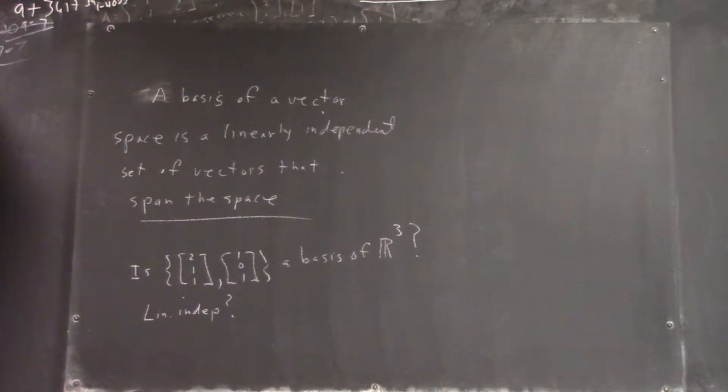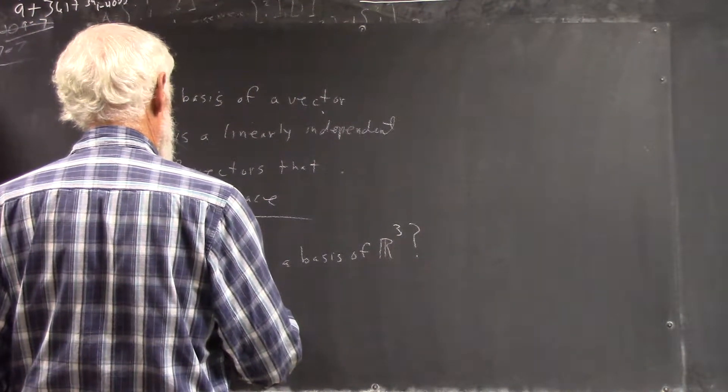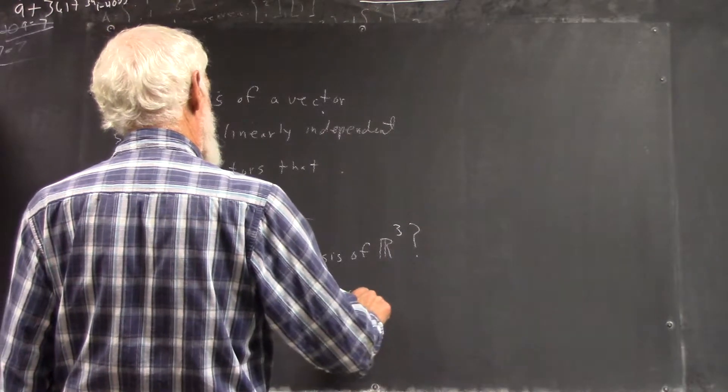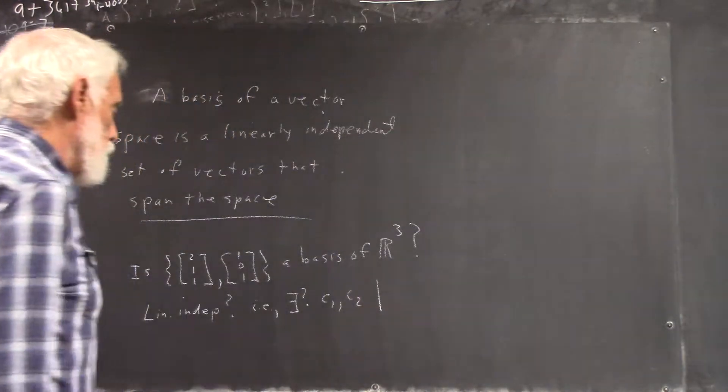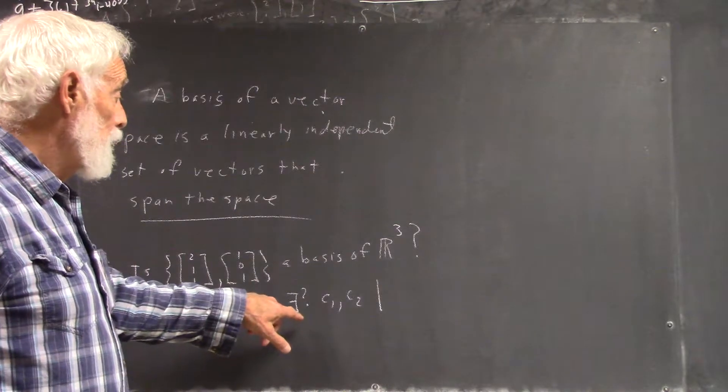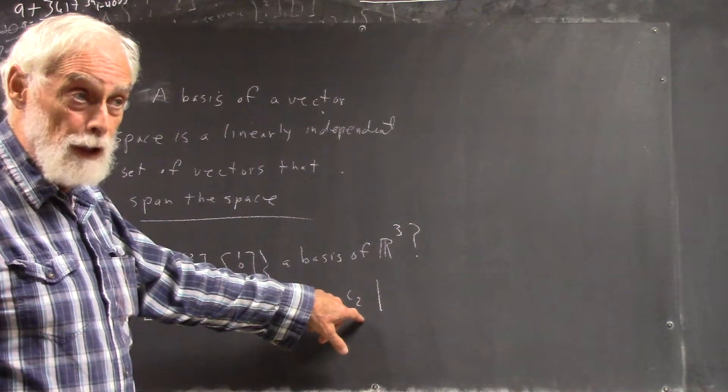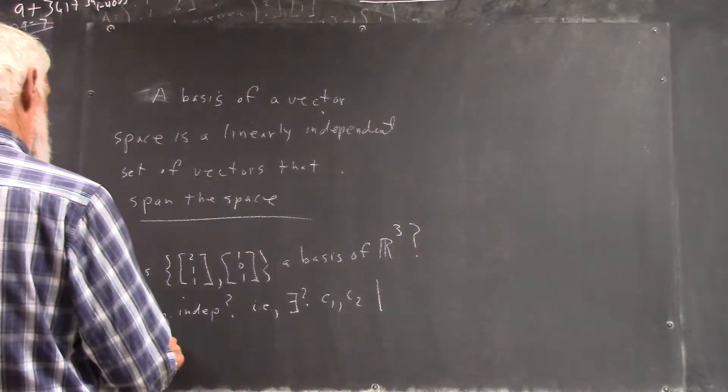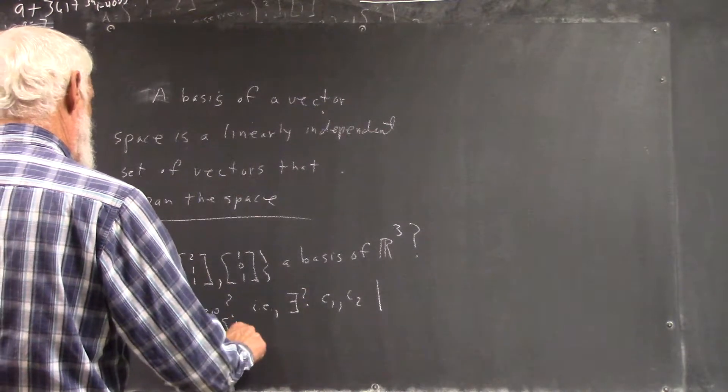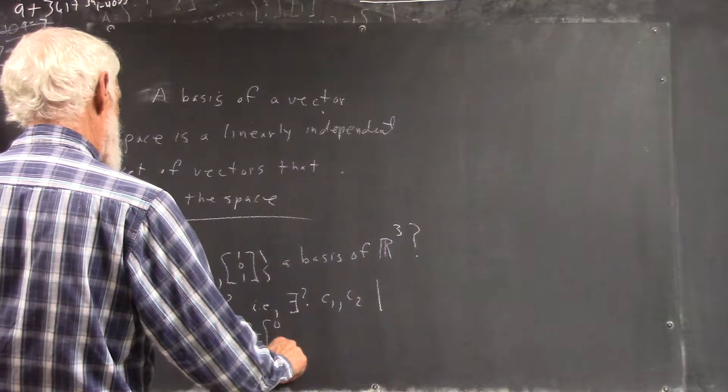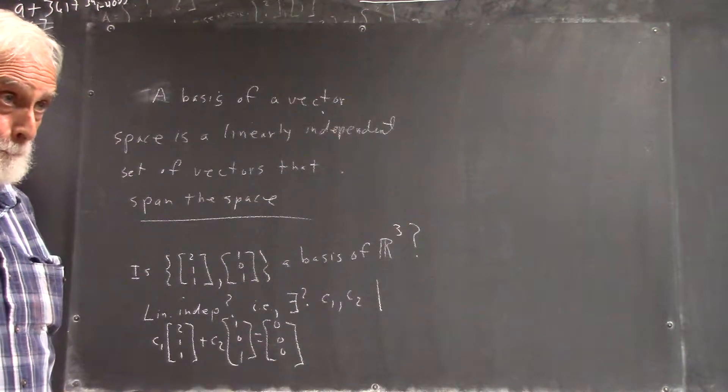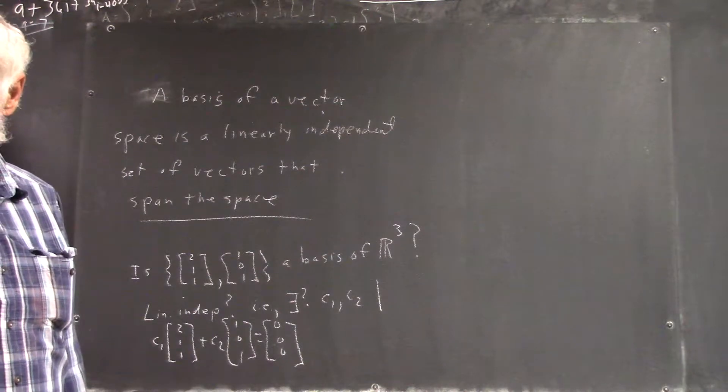Now, if it's linearly independent, that means you answer the question: is it linearly independent? It's the same as the question of does there exist c1, c2 constants such that these two, this sum is zero. That's what it means.